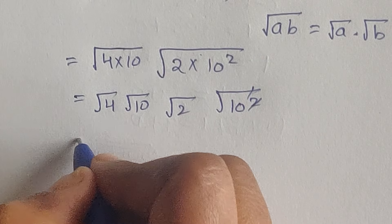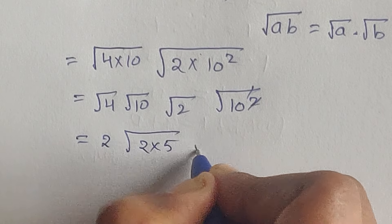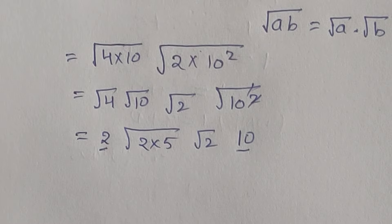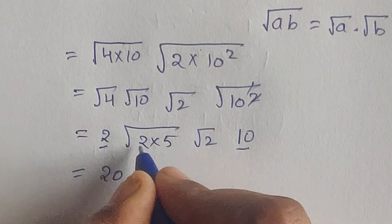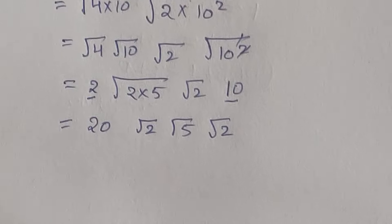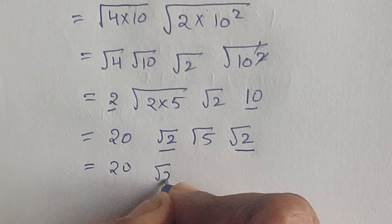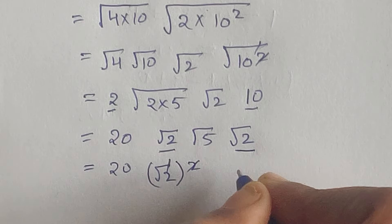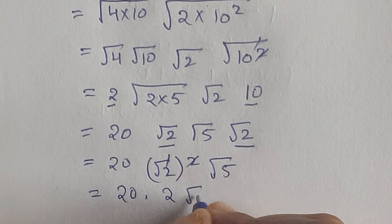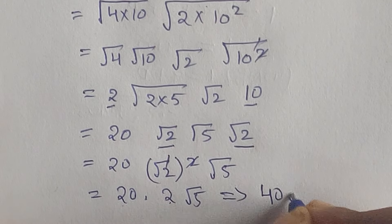Simplifying: square root of 4 is 2, square root of 10 squared is 10, and square root of 10 equals square root of 2 times 5. Combining these: 2 times 10 equals 20, and 20 times 2 equals 40, giving us the final answer of 40 square root of 5.